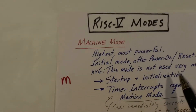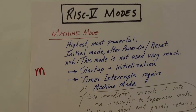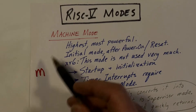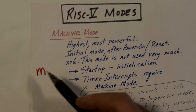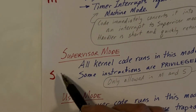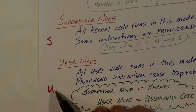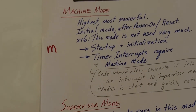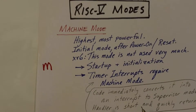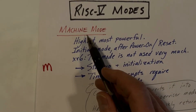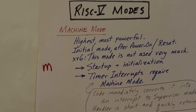At any time, the RISC-V processor is in one of three modes: machine mode (M), supervisor mode (S), and user mode (U). Each core has its own set of registers, and each core is running in exactly one mode at any one time.